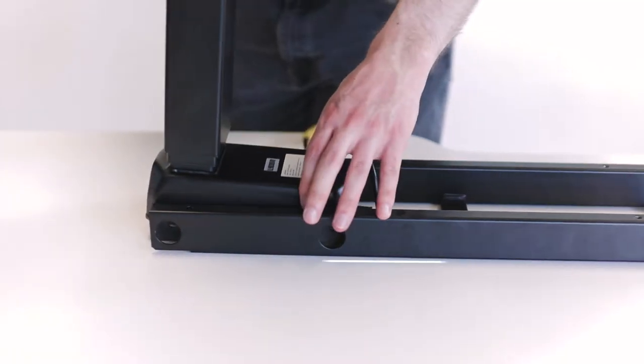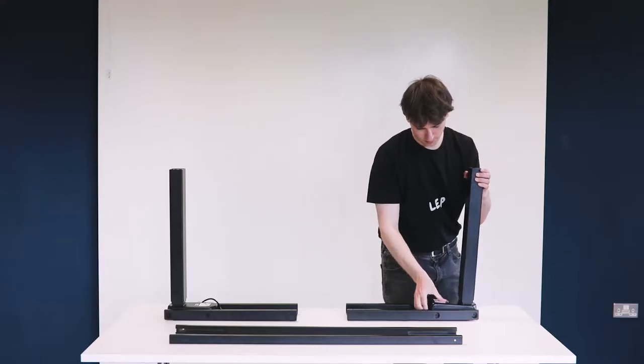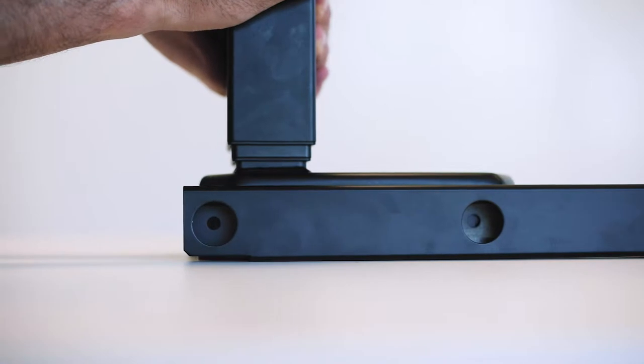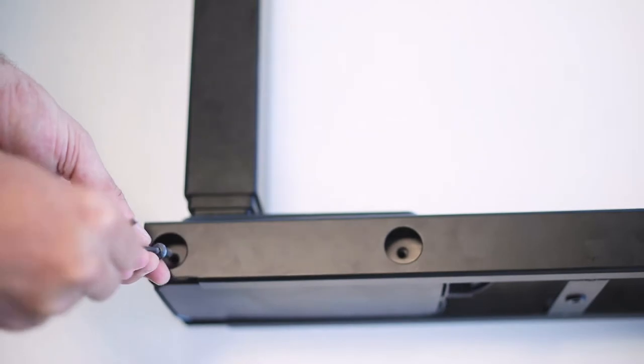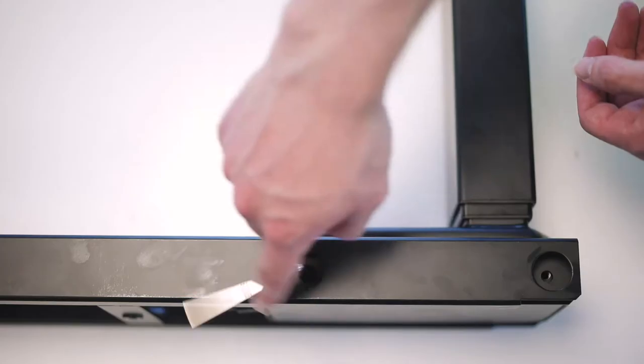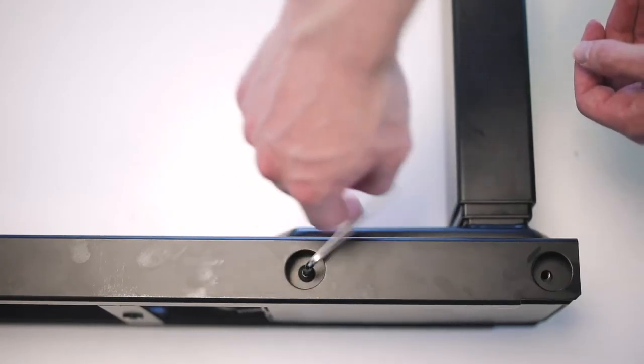Align the lifting column with the crossbar ends in the proper orientation, ensuring they are in line with the screw holes. Insert the larger machine screws into the holes using the allen key provided. Rotate these a few times without fully tightening the screw.